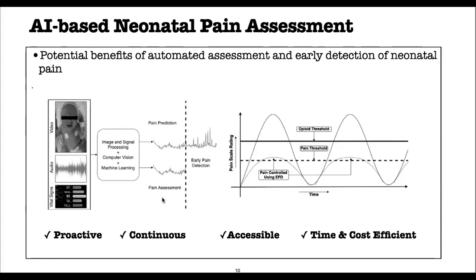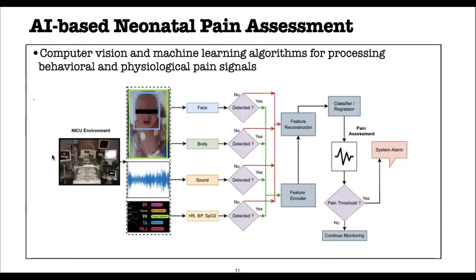Other benefits of automating pain assessment include continuous monitoring, better accessibility and portability, and efficiency in terms of time and cost. This slide shows an overall view of the system, which contains different computer vision and machine learning algorithms to analyze behavioral and physiological pain signals. The system takes a video signal containing the face and body, audio signals, and vital signs as input.